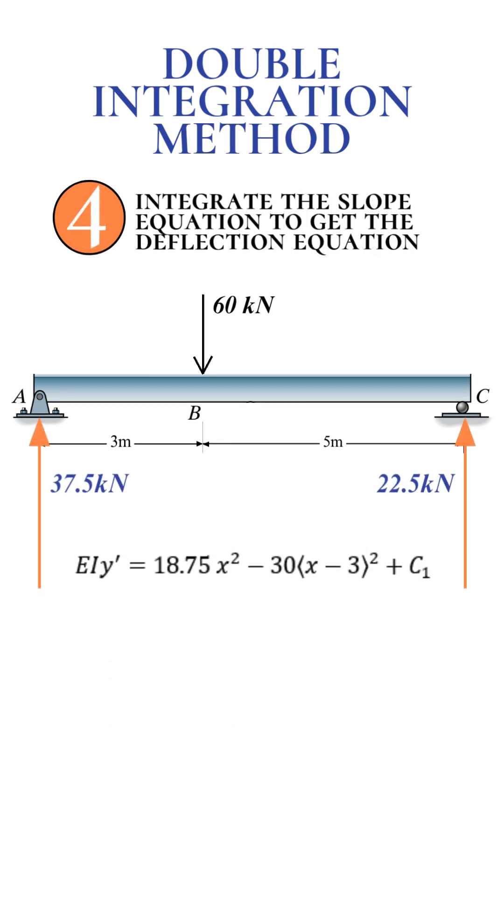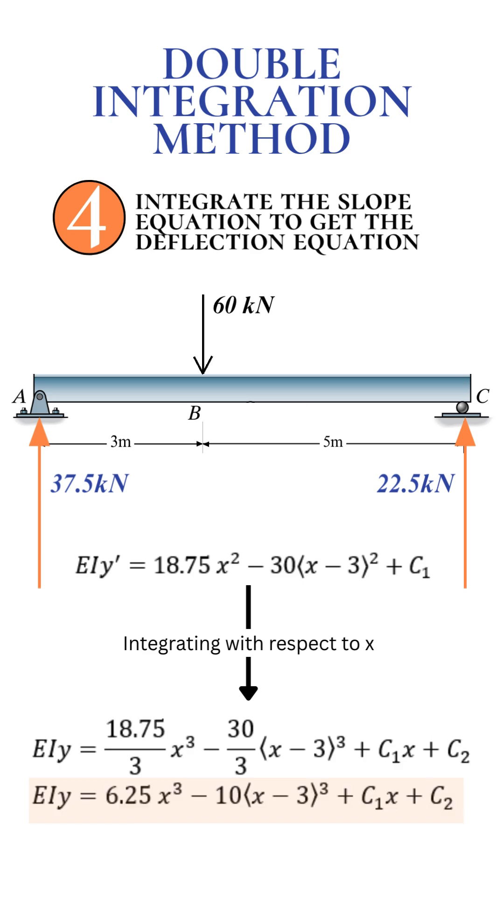Step 4: Integrate again to get the deflection equation or EIY. Integrate the slope equation to find the deflection equation. This time, include another constant of integration, C2. You now have the general equation for the beam's deflection curve.